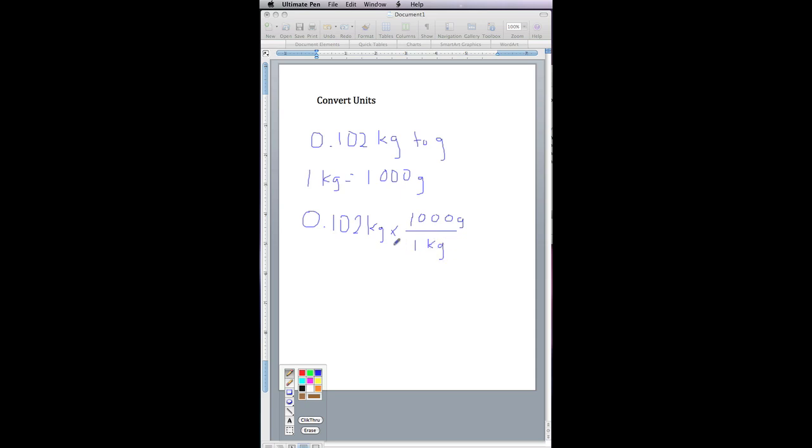We know we set it up correctly, because the kilograms cancel. What's left tells us to multiply, so we multiply 0.102 by 1,000 and get 102 grams.